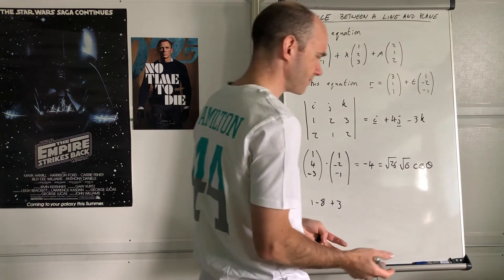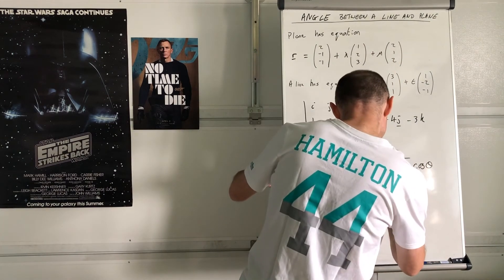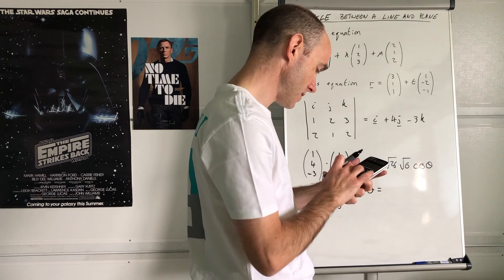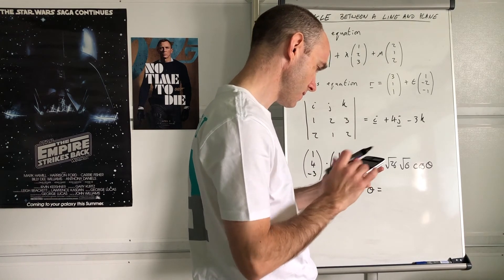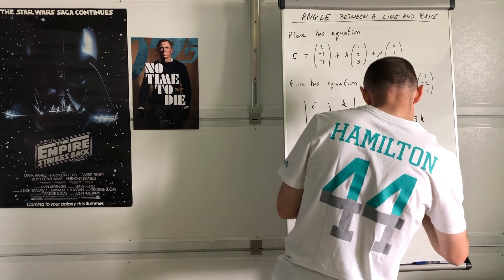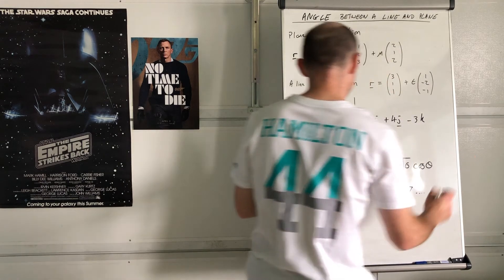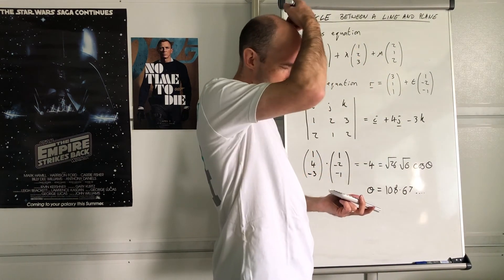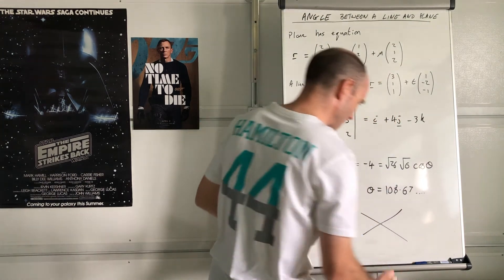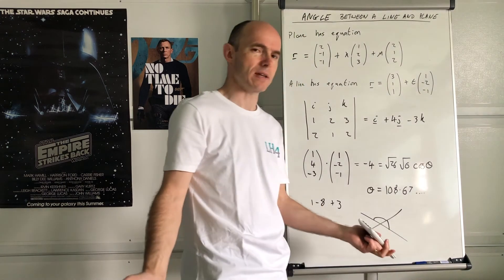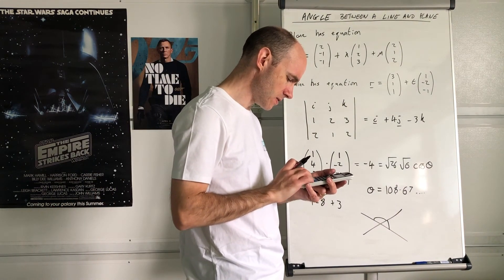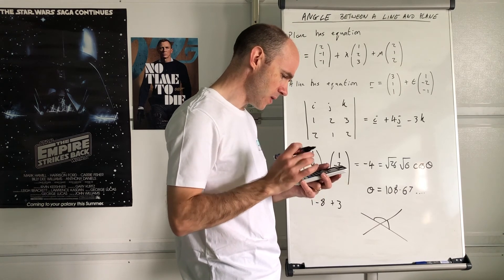The scalar product is negative, which means we'd get an obtuse angle. Taking the inverse cosine gives approximately 108.67°. Since we only care about the actual angle between the lines (not which side), we take the acute angle: 180° - 108.67° = 71.32°. This is the angle between the line direction and the normal.